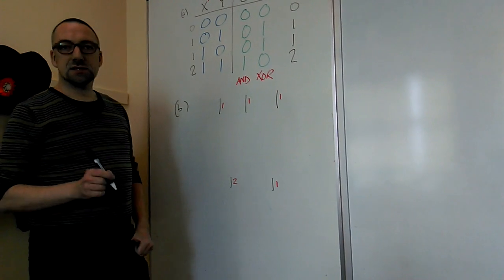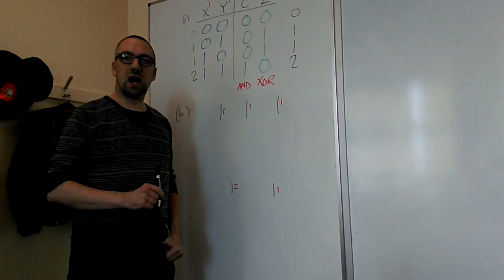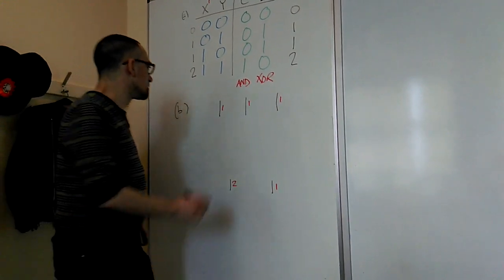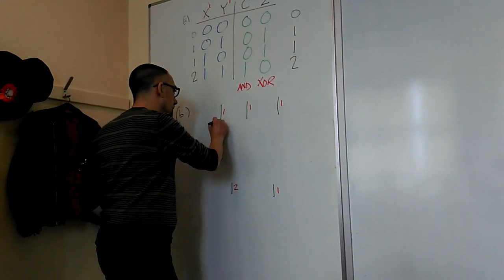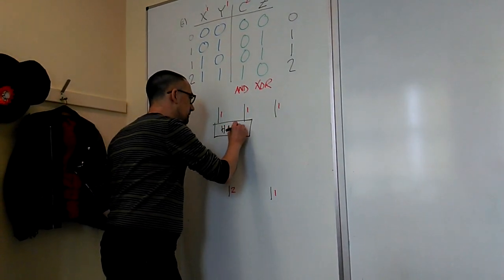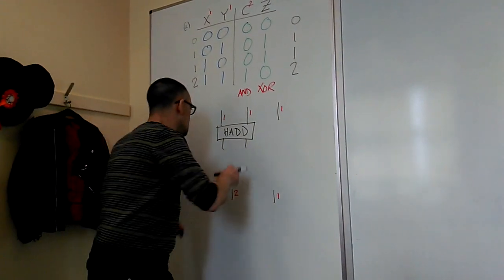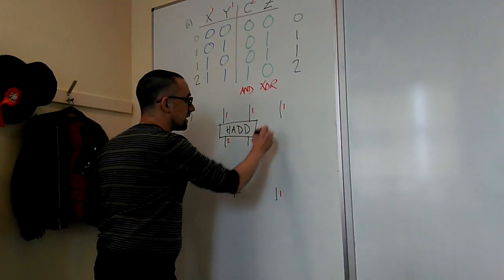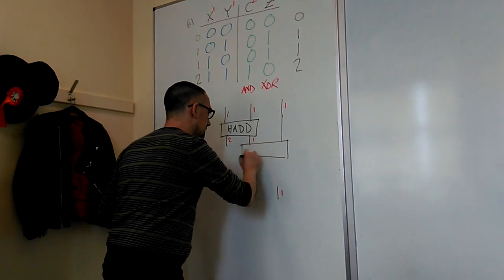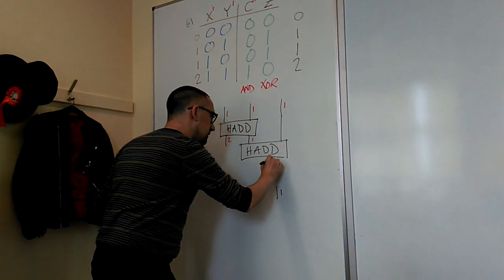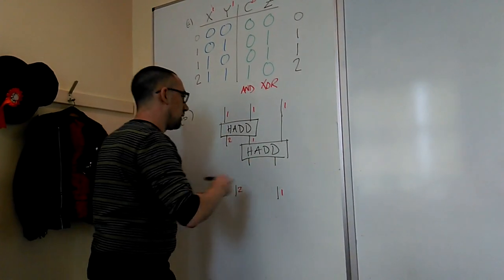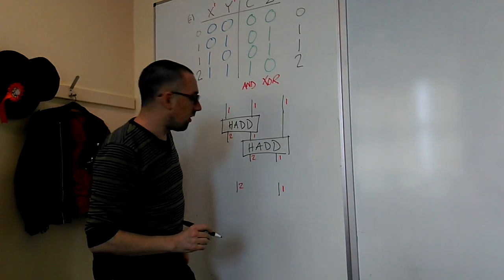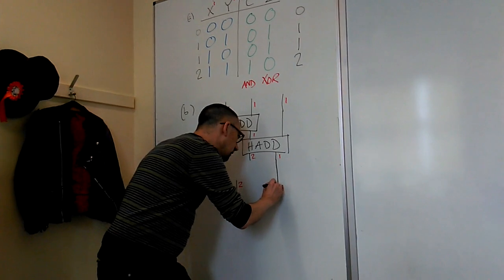The good strategy is to start with the lowest place value and work towards the highest, and to start for each place value with the leftmost signals. Starting on the left, we only have one place value — that's 1. We fill in a half adder, and out comes signals of place value 1 on the right and 2 on the left. Now we still have two signals of place value 1, so we fill in another half adder to add them, and out comes one signal of place value 1 and another of place value 2. Now we have only one signal of place value 1 remaining, so that has to be the output at place value 1.